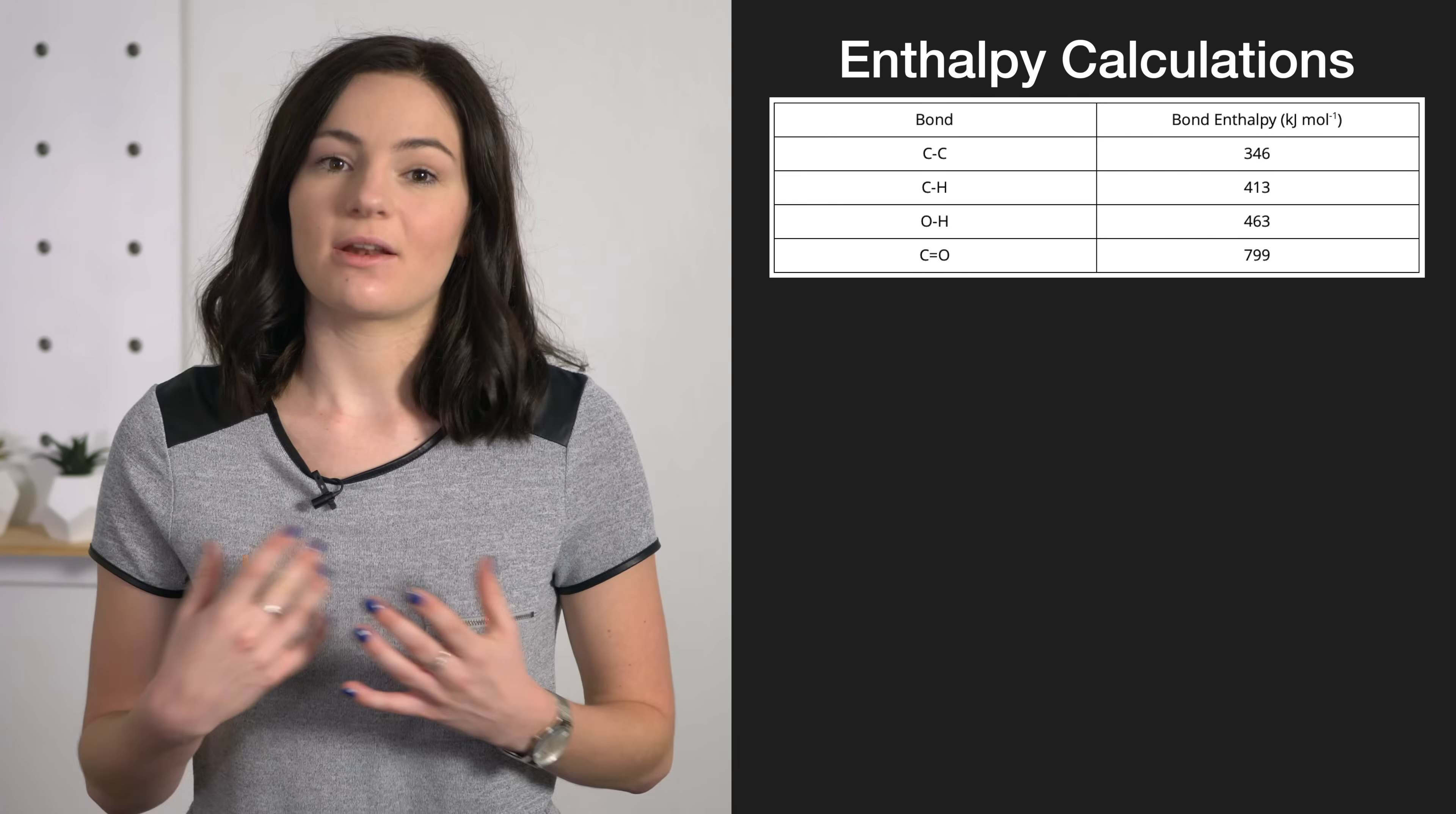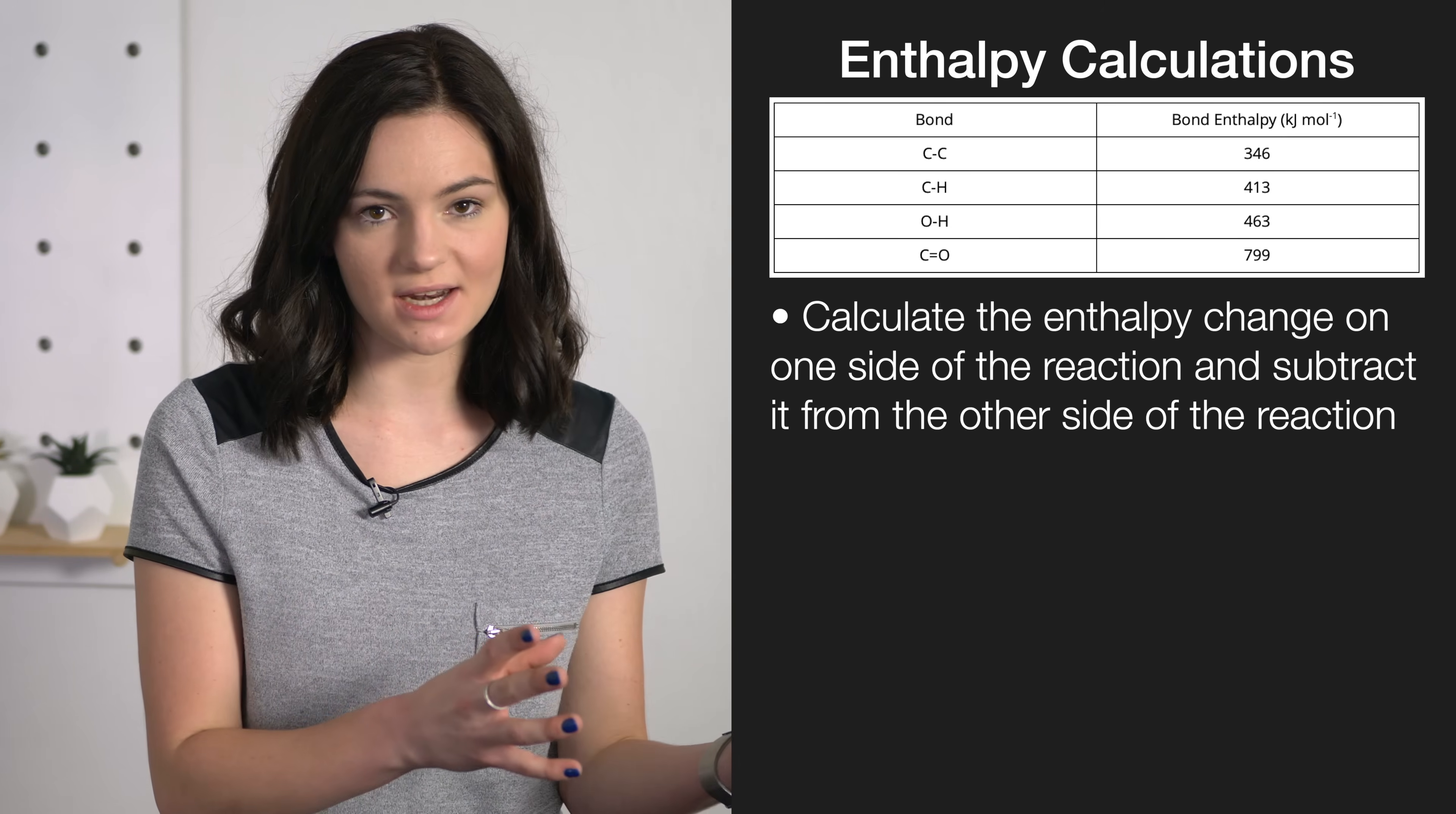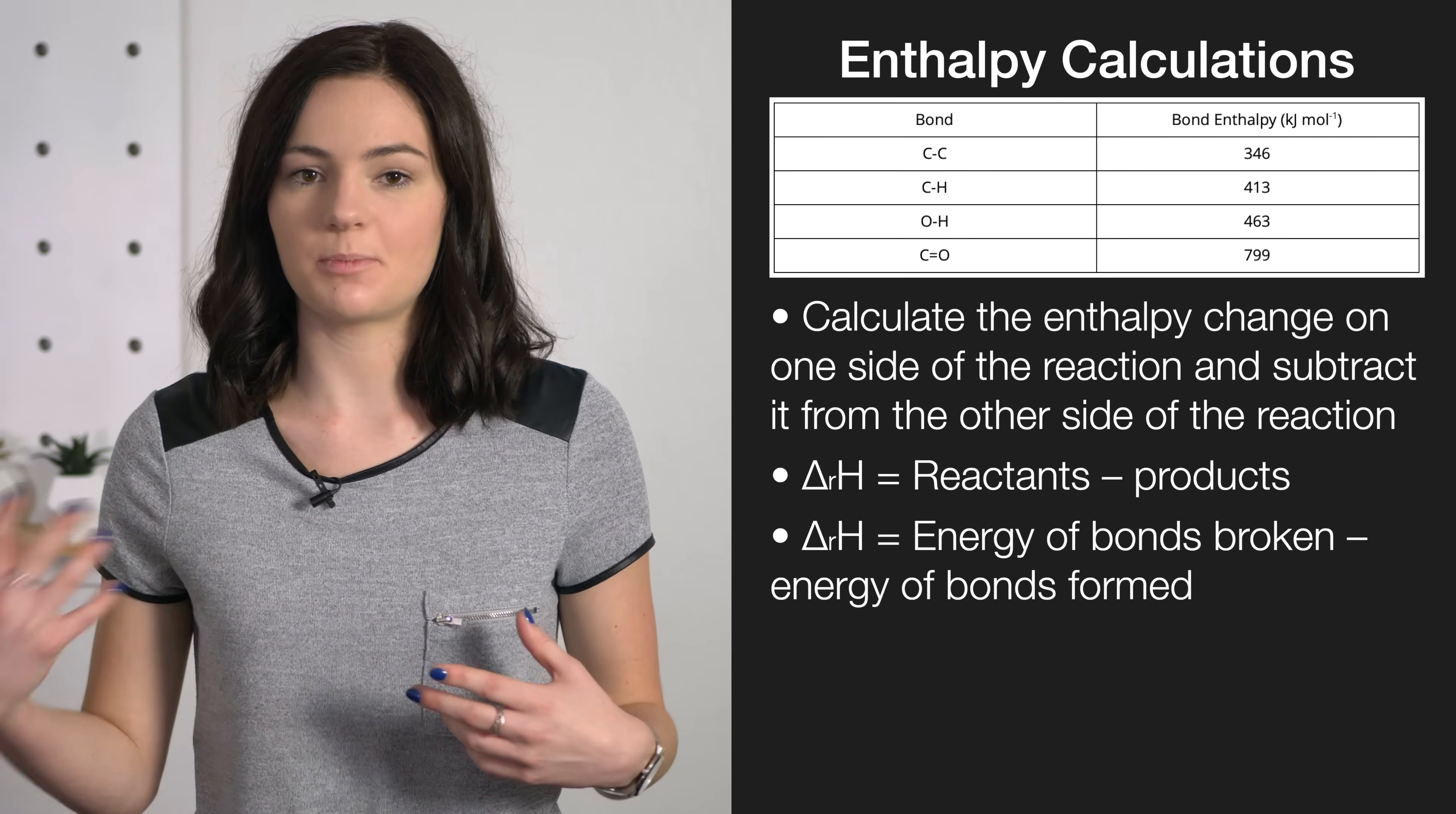You'll get a table like this, and what you have to do is calculate the enthalpy change of a reaction. So you calculate the enthalpy change on one side of the reaction and subtract it from the other. It's reactants minus products, bonds broken minus bonds formed.